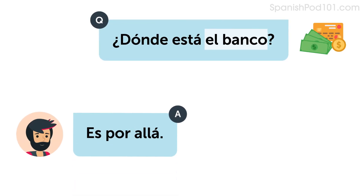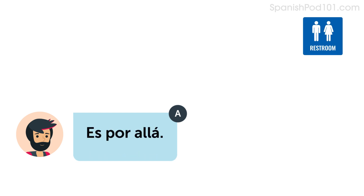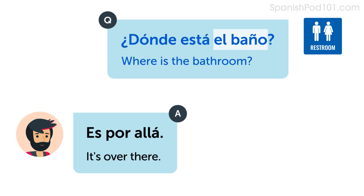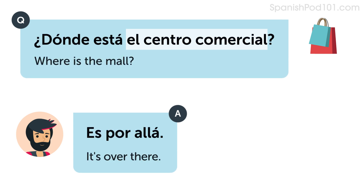Let's look at some examples. Listen and repeat or speak along with the native speakers. ¿Dónde está el banco? — Where is the bank? Es por allá. — It's over there. ¿Dónde está el baño? — Where is the bathroom? Es por allá. — It's over there. ¿Dónde está el centro comercial? — Where is the mall? Es por allá. — It's over there.